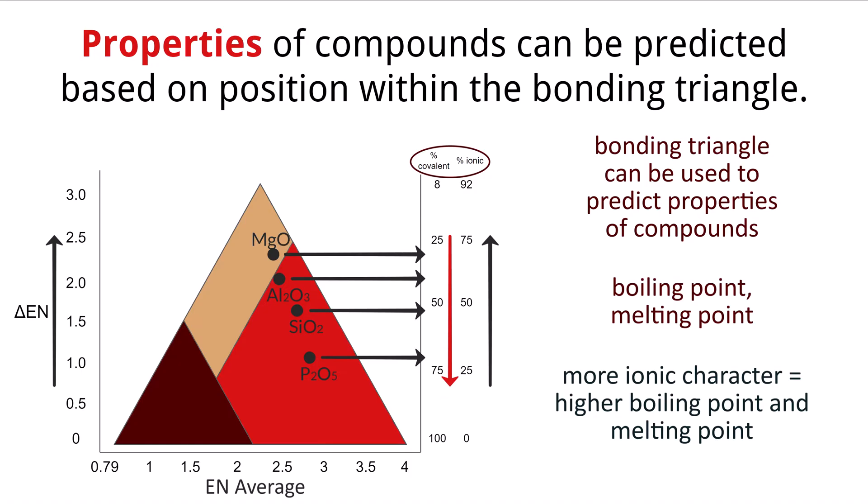Other properties such as conductivity can also be predicted based on how ionic or covalent the bond is. Similarly, we could predict different metallic physical traits by doing a very similar comparison to percent metallic, which can change traits like electrical conductivity, malleability, and ductility of metals. Not all metals are the same and can have different traits that can be useful in different scenarios.